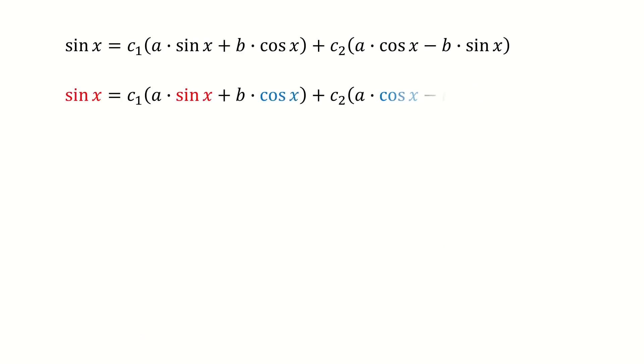Then we put them into different colors for sine and cosine. For the right-hand side, we just expand it, and then we collect the coefficients for the sine and cosine term. For the left-hand side, because there is no cosine term, we put a 0 times cosine x.